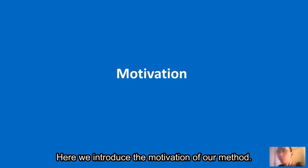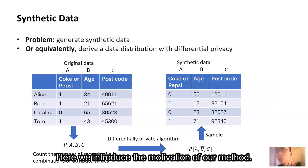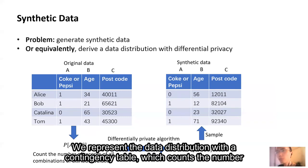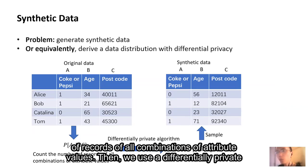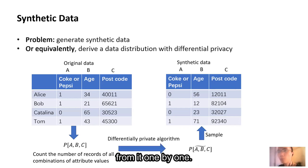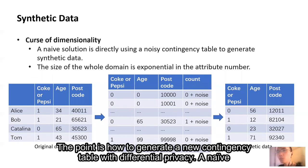Here we introduce the motivation of our method. Generating synthetic data is equivalent to deriving a data distribution with differential privacy. We represent the data distribution with a contingency table, which counts the number of records of all combinations of attribute values. Then, we use a differentially private algorithm to generate another contingency table. After that, we sample synthetic records from it one by one.